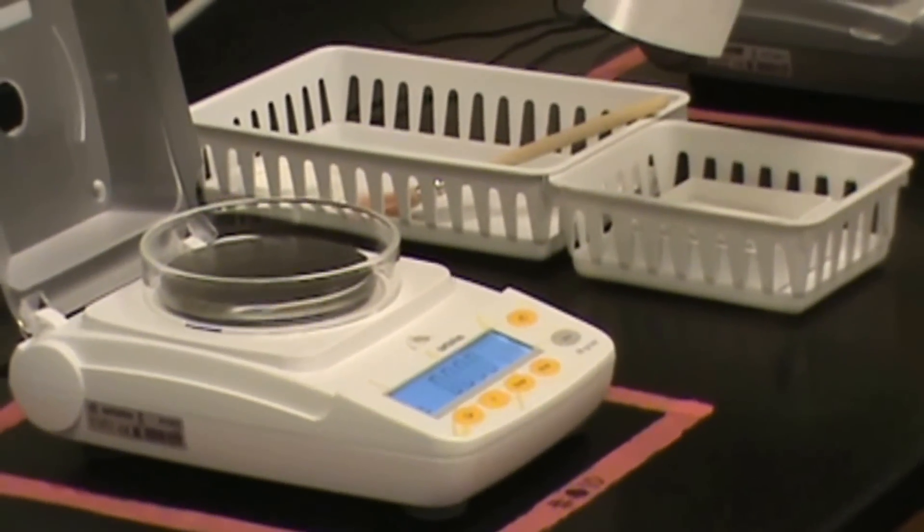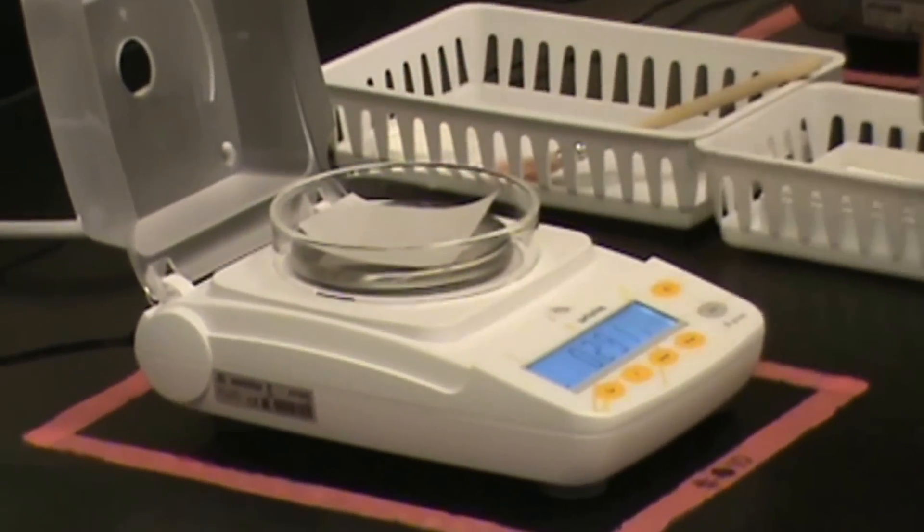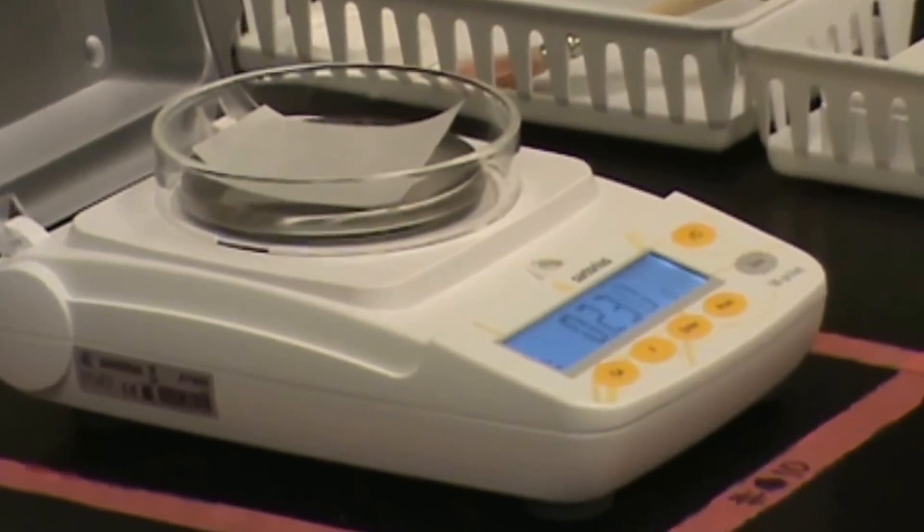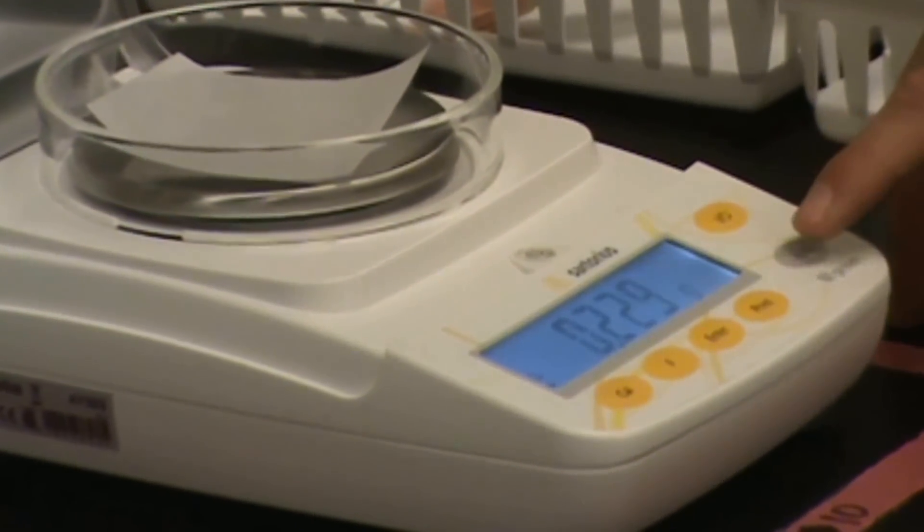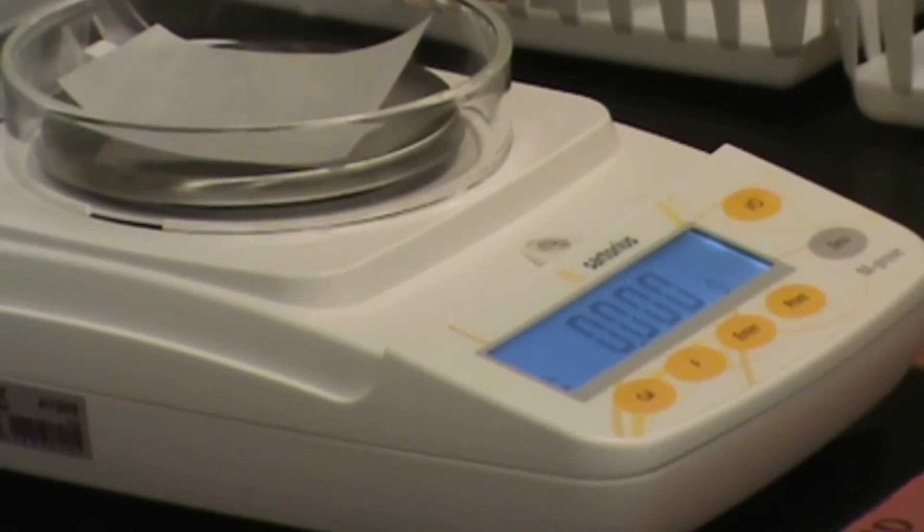Adjacent to the balances, you will find these weighing papers. You place them on the pan in order to protect the pan from the chemicals. At this point, you will probably want to hit the zero or tare button in order to re-zero the mass. The balance will automatically subtract out the mass of the weighing paper.